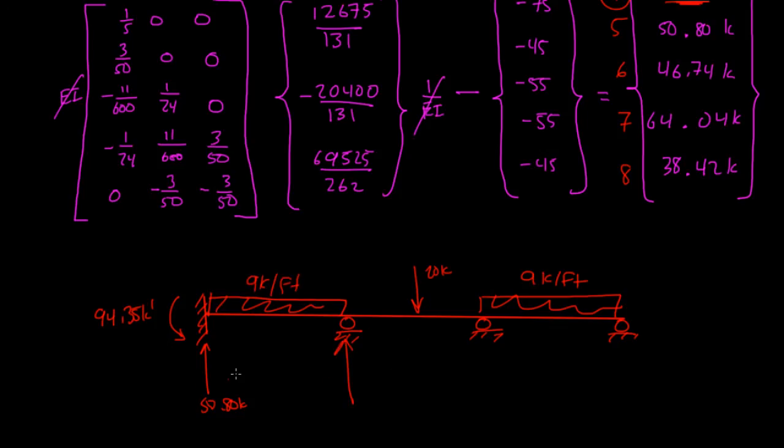And then for the 6th degree of freedom, we had this 46.74, 46.74 kips. And then 7 was 64.04 kips. And then finally, 8 was 38.42 kips.